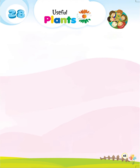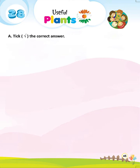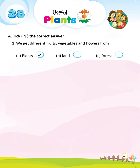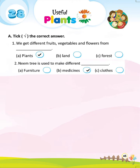Let's start Lesson 28: Useful Plants A. Take the correct answer. Question 1: We get different fruits, vegetables and flowers from — A. Plants.